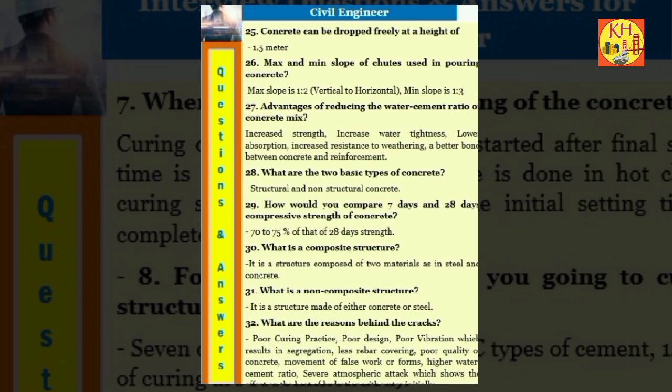Question 28: What are the two basic types of concrete? Structural and non-structural concrete. Question 29: How would you compare 7 days and 28 days compressive strength of concrete? 70-75% of that of 28 days strength. Question 30: What is a composite structure? It is a structure composed of two materials as in steel and concrete. Question 31: What is a non-composite structure? It is a structure made of either concrete or steel.